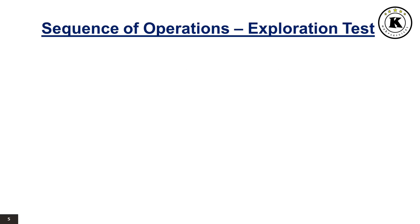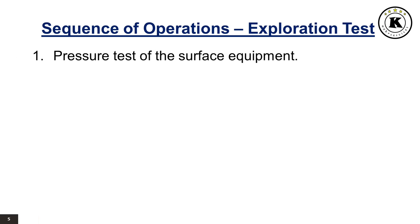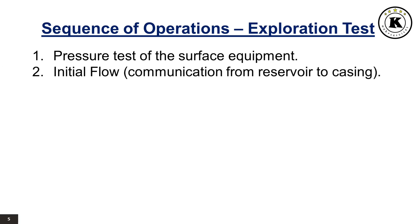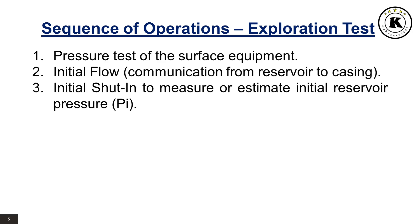Sequence of Operations — Exploration Test. 1. Pressure test of the surface equipment. 2. Initial flow — communication from reservoir to casing. 3. Initial shut-in to measure or estimate initial reservoir pressure PI.